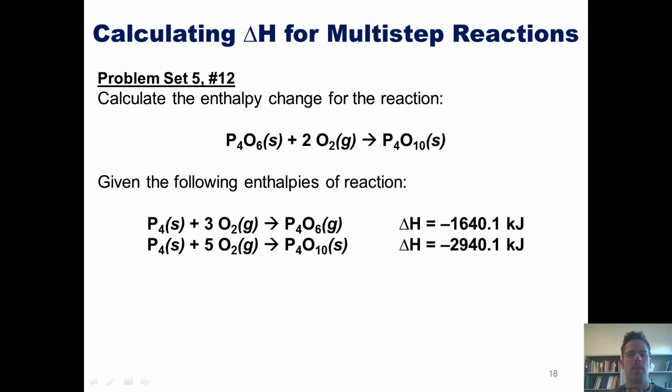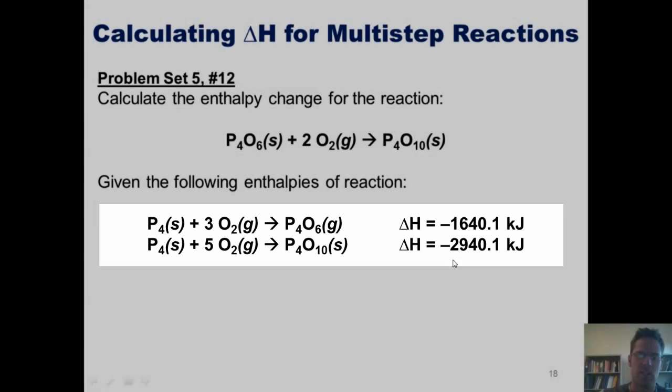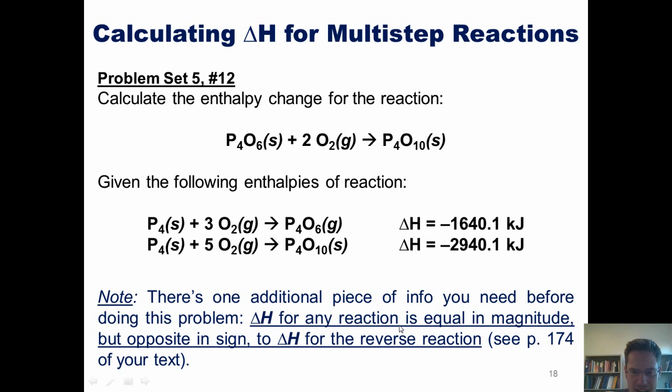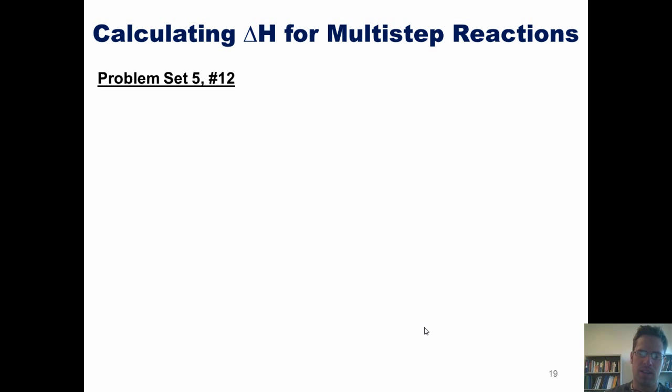So, let's do some examples. I want you to calculate the enthalpy change for the reaction shown here, knowing first that the individual delta H's for these two separate processes are the values shown. In order to do this, I have to point out one more thing. Delta H for any reaction going in one direction is equal in magnitude but opposite in sign to going in the reverse direction. In other words, if I take a reaction with the reactants on the left side and the products on the right side and I have a delta H, I decide to just flip those around so that my products are now on the left side and my reactants are on the right side, then the delta H of the reverse process has the exact same number. I just swapped the sign from negative to positive or vice versa. That will become important in this particular example.